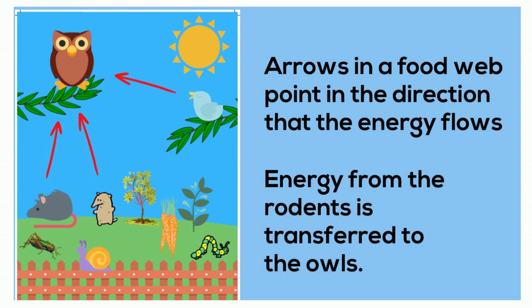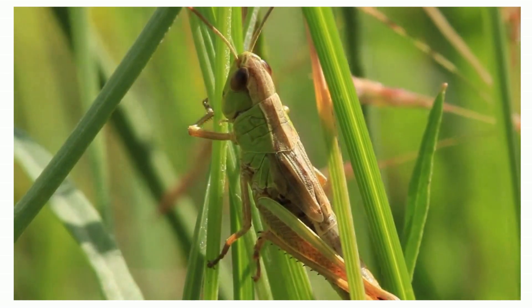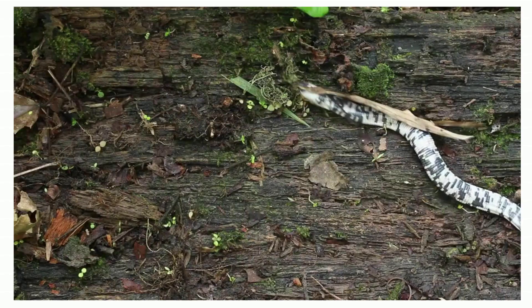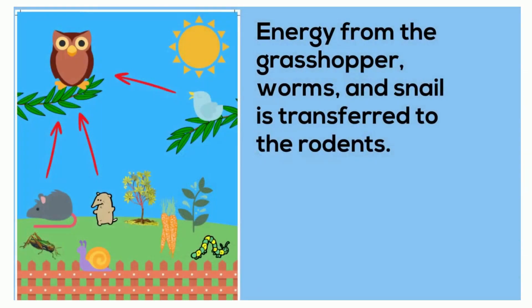The owl is considered the tertiary consumer because it is the topmost level and feeds on other carnivores. Now let's see what the rodents eat. Rodents eat a large variety of insects including grasshoppers, along with worms and snails. The energy of these animals is transferred to the rodents, so the arrows point towards the rodents.